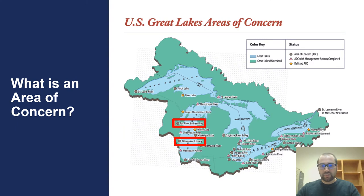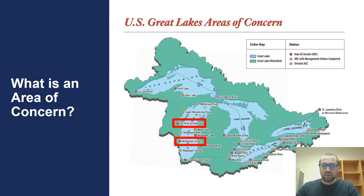So what is an Area of Concern? An Area of Concern, or AOC, is an area on the Great Lakes that has a history of significant environmental degradation caused by human activities, preventing people and wildlife from fully using or enjoying the local waterways. The map on screen shows the five Great Lakes — Superior, Michigan, Huron, Erie, and Ontario — with the 31 highly degraded shoreline areas in the U.S. that were identified as Areas of Concern in the 1980s. There are an additional 12 areas on the Canada side of the Great Lakes not identified on this map.